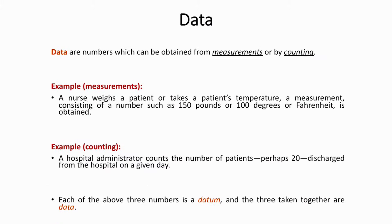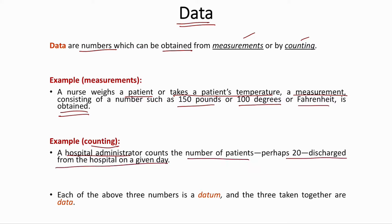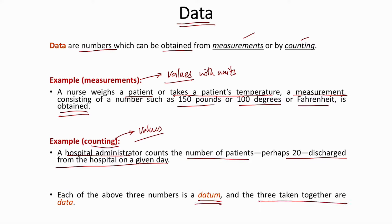Data is basically numbers obtained from measurements or by counting. An example of measurement is a nurse weighing a patient or taking a temperature, resulting in values like 150 pounds or 100 degrees Fahrenheit. Counting is when a hospital administrator counts the number of patients — say, 20 — discharged on a given day. Measurements are values with predetermined units, while counting involves individual cases. Each individual result is called a datum, and together they are called data.